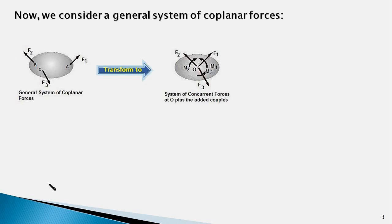Now, in order to simplify this system of forces, we select a reference point, say point O, as you can see in the next diagram. We shift the point of application of force F1 from point A to point O, keeping its magnitude and direction unchanged. And in order to avoid any change in the effect of F1 on the body, we add a couple of moment M1 which is equal to the moment of force F1 about point O. We repeat this process for the other two forces too. In effect, we transform the original system of non-concurrent forces to a system of concurrent forces at point O and a system of moments, which you can see in this diagram.